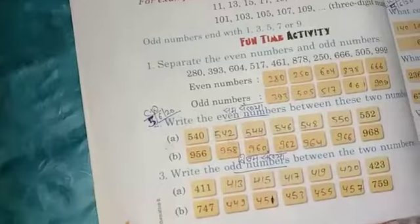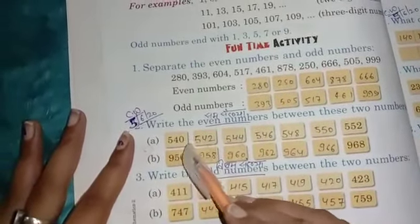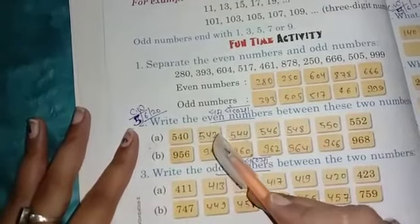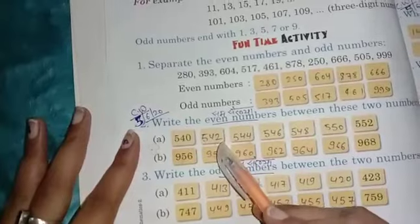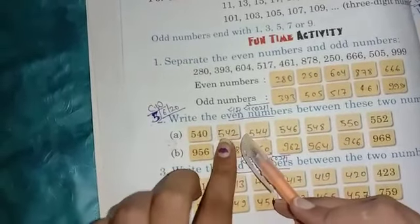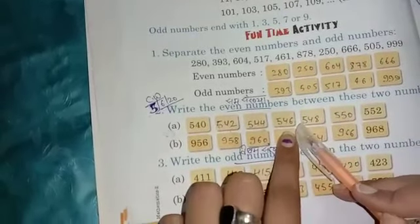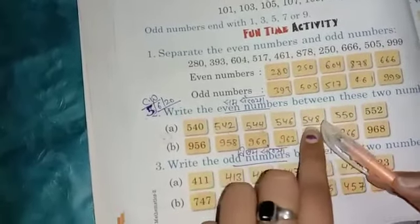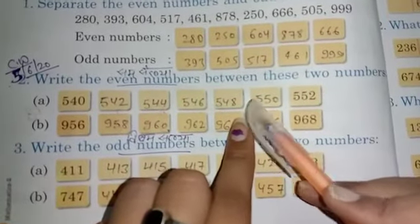Let's begin. You have to write all the even numbers between 540 and 552. After 540 comes 541 but that won't be included students because 1 does not come in our 2 times table. So we will write 542, 543 will not be included because 3 does not come in 2 times table, then 544, 545 will not be included, then 546, 547 will not be included, 548, and 549 will also not be included because 9 does not come in 2 times table, and 550 is also included.